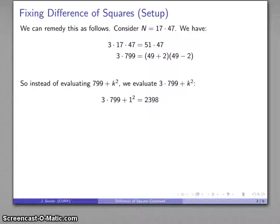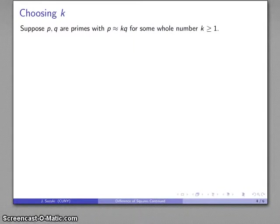So, how does that look? Well, 3 times 799 plus 1 squared is 2398, plus 2 squared is 2401, which is a perfect square. And that gives me my factorization, 51 times 47. And I'll drop that factor of 3 now and have my factorization of 799.